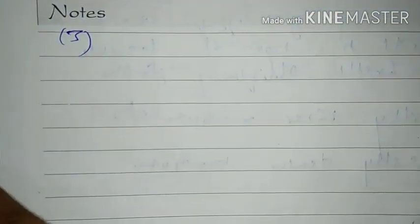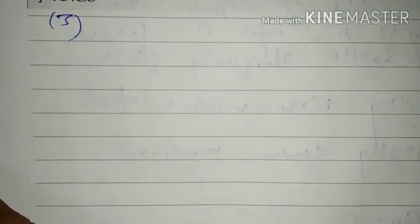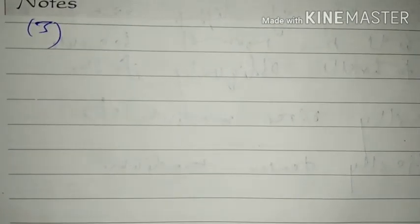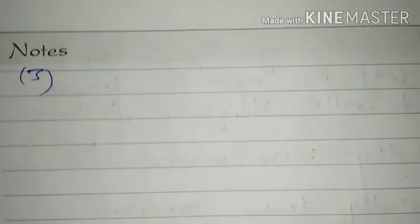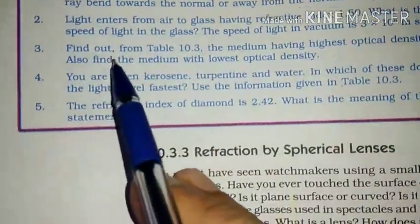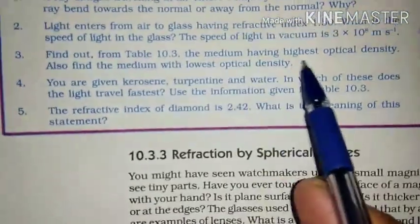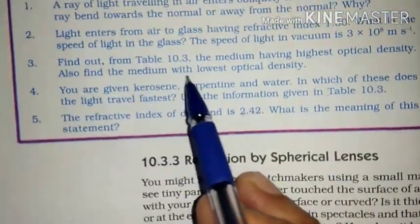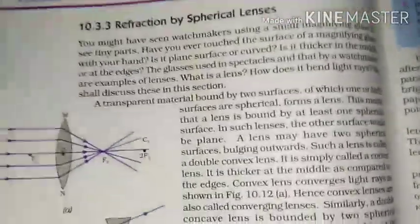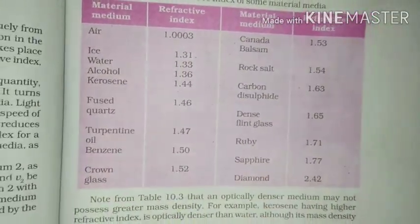Dear students, first try to solve questions yourself and then compare with my solutions — your learning will be more fruitful and authentic. Try to solve each question two or three times. Question number three: 'Find out from Table 10.3 the medium having highest optical density. Also find the medium with lowest optical density.' We shall use Table 10.3 from NCERT page 175.